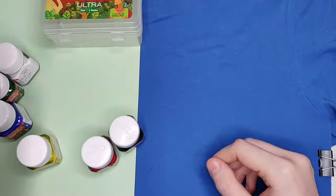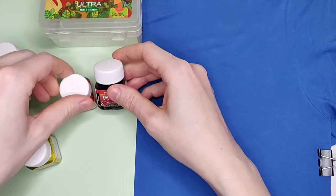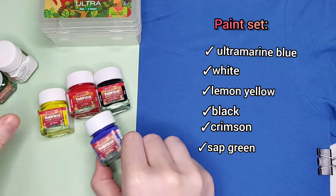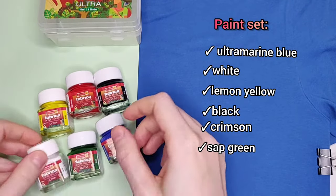The colors in the box are not primary shades. We have here ultramarine blue, white, lemon yellow, black, crimson and sap green.